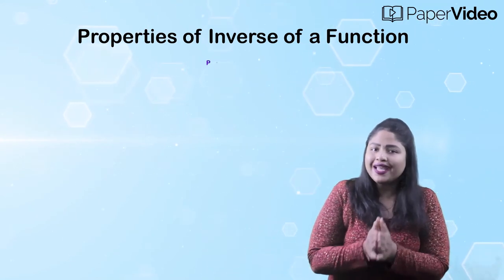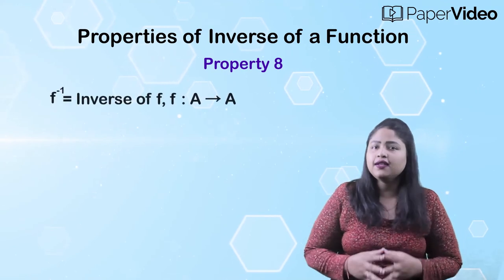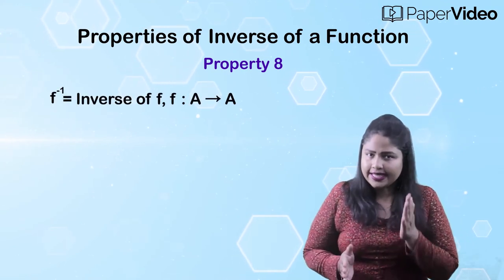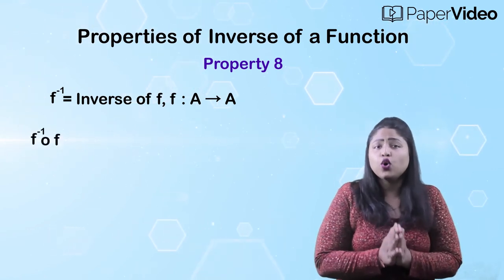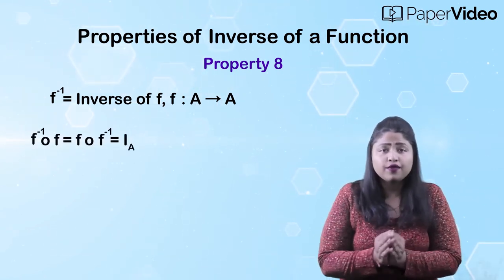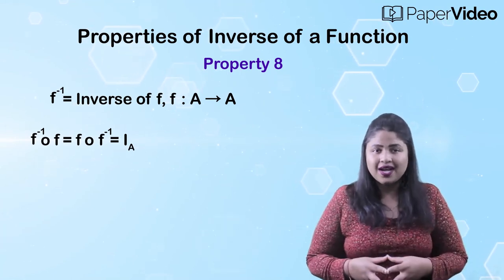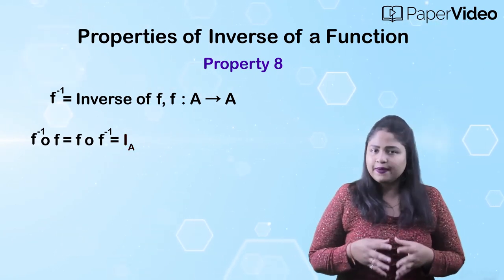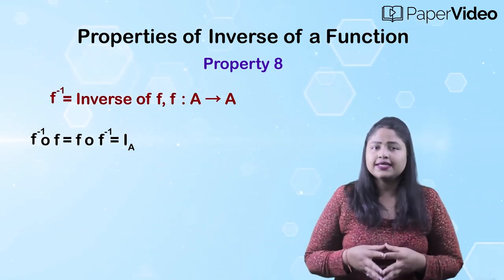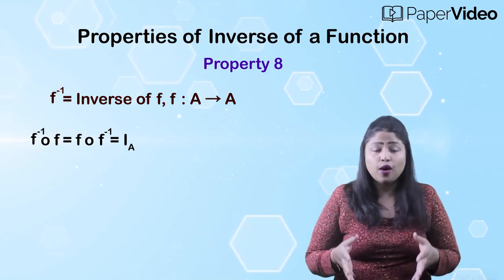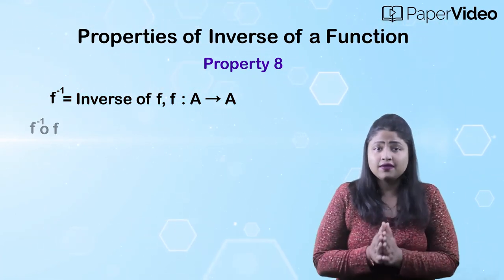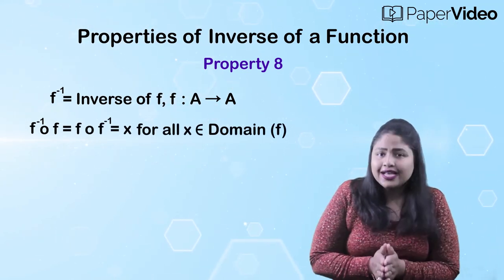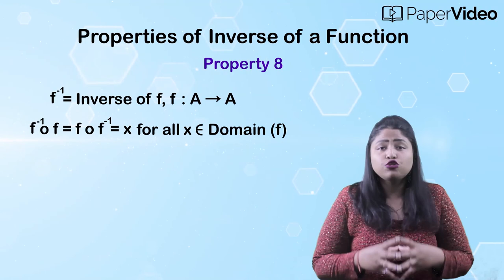According to the eighth property, if f inverse is an inverse of function f defined on two equal sets, then the composition function f inverse of f equals f of f inverse equals i_A, where i_A is the identity function on the set A. This means that f inverse of f equals f of f inverse equals x for all x belonging to the domain of f.